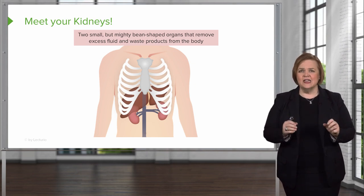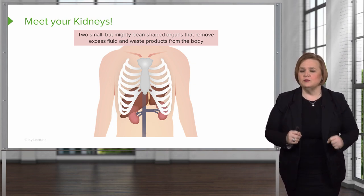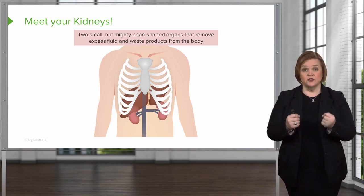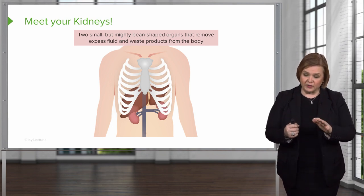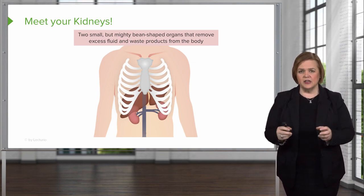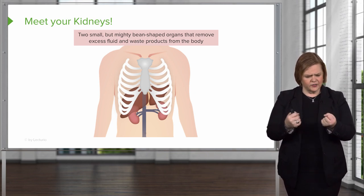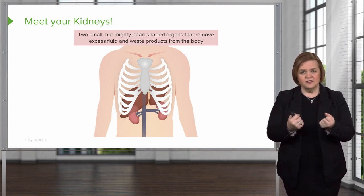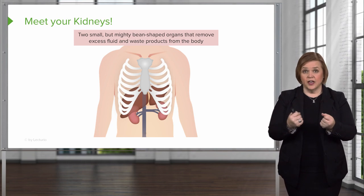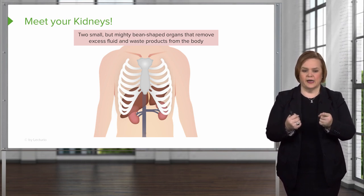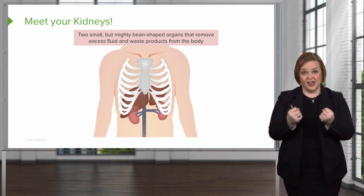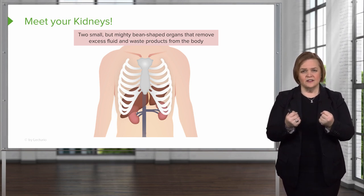They are mighty bean-shaped organs, about the size of your fist. Do me a favor and humor me — put down your writing utensil for just a minute and ball up both of your fists. Take a look at those. That's about the actual size of the kidneys located in your body. So here you have two of them, about the size of your fists.